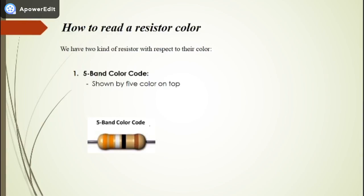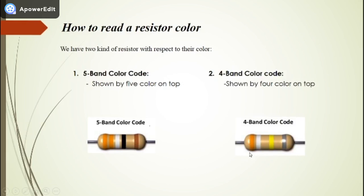In this video we will learn the reading of resistance color codes of resistors. We have two kinds of resistors with respect to their color. The first one is the five-band color code — the resistor includes five bands of color. The second one is the four-band color code, where the resistor includes four types of colors.